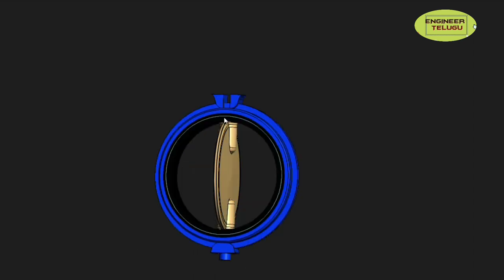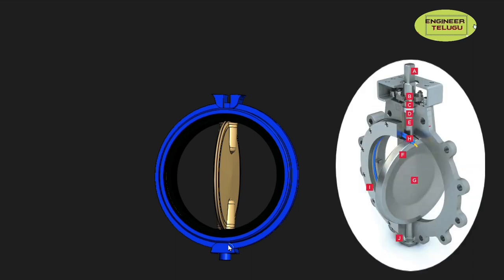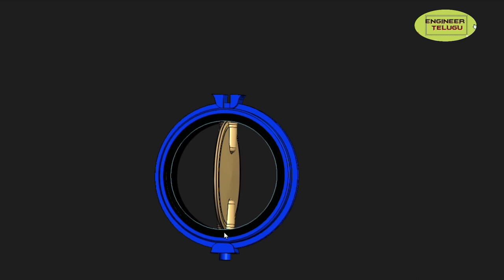The stem connection is at the top. The bottom is free to move the disc. There are bearings, seals, and o-rings. There are also packing materials. There is a leak path inside the fluid. If you rotate the stem, it will be free to rotate. You can arrange the bearings. The operation is easy.